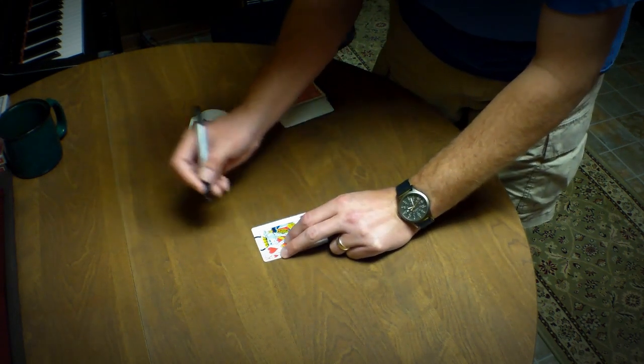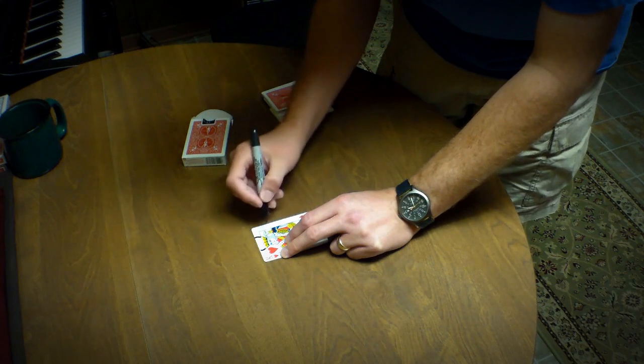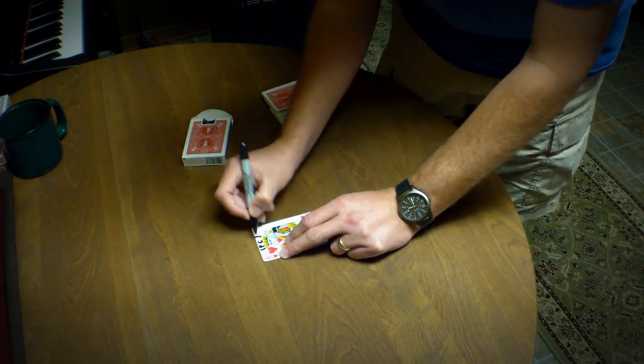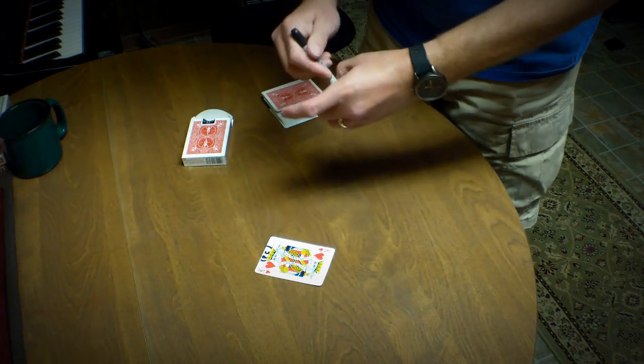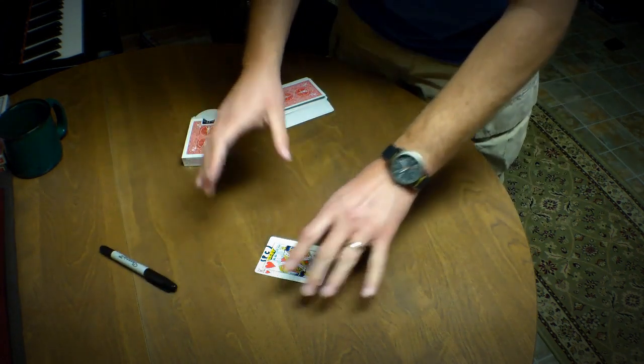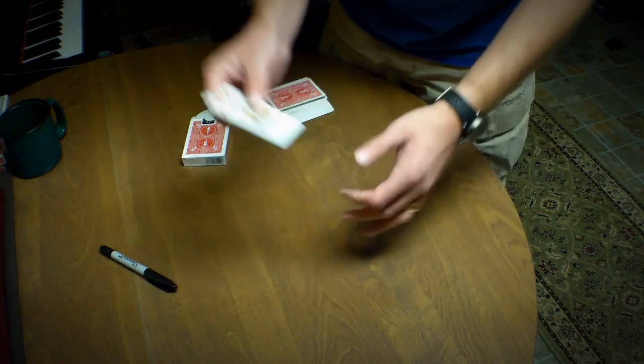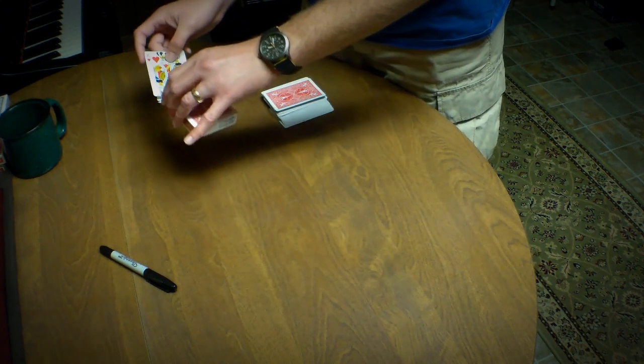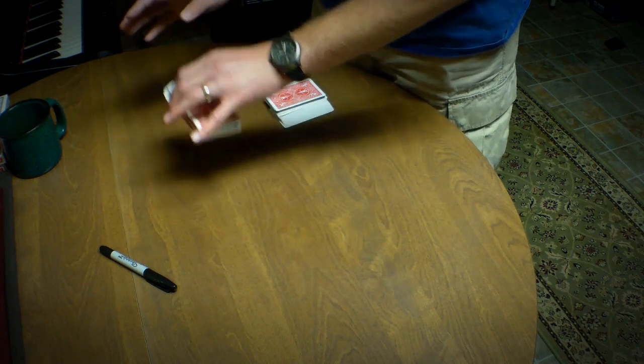So let's say you put in Peter Cottontail, PC, whatever. Okay, so that's your initials. What I want to do with this card that you've selected freely is I want to keep it safe. We're going to put this in safekeeping inside the box.